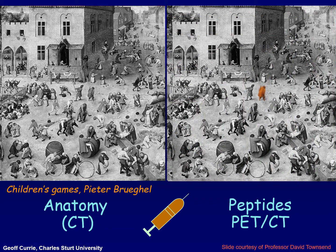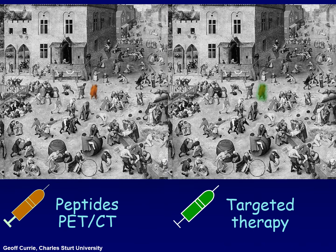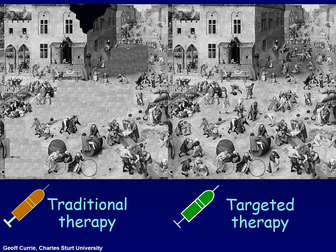But recent advances have seen the emergence of peptides that specifically target cell surface receptors or antigens that are overexpressed in specific diseases, including cancers. The net effect is more targeted radiopharmaceuticals for more precise imaging. Indeed, that level of precision then allows targeted therapy, and we have a growing array of theranostic pairs in PET-CT. So more targeted therapy gives better outcomes without as much collateral damage — in this case, the old person is removed from the scene by targeted therapy without any destruction to buildings or omission of children.